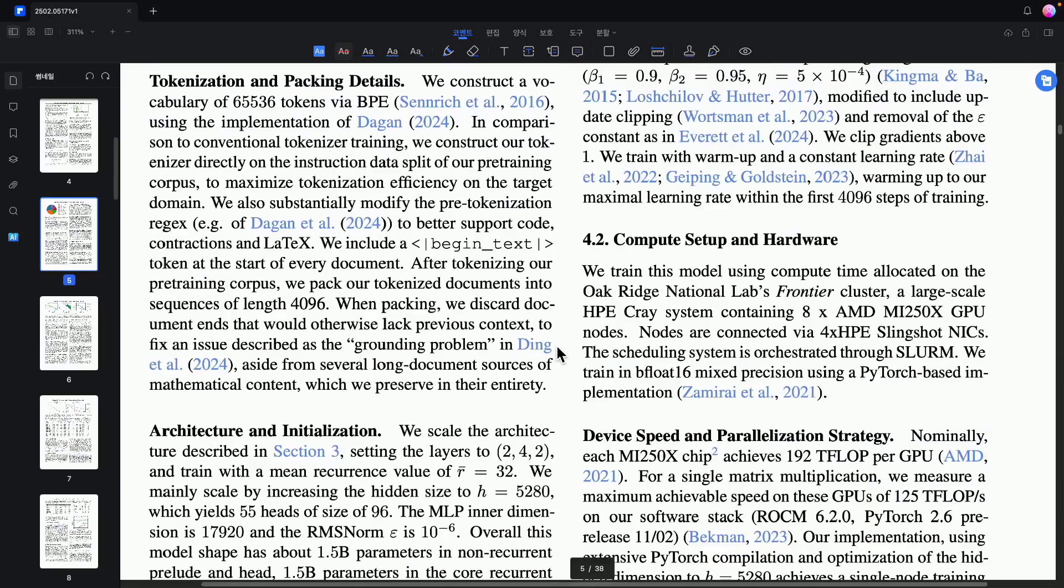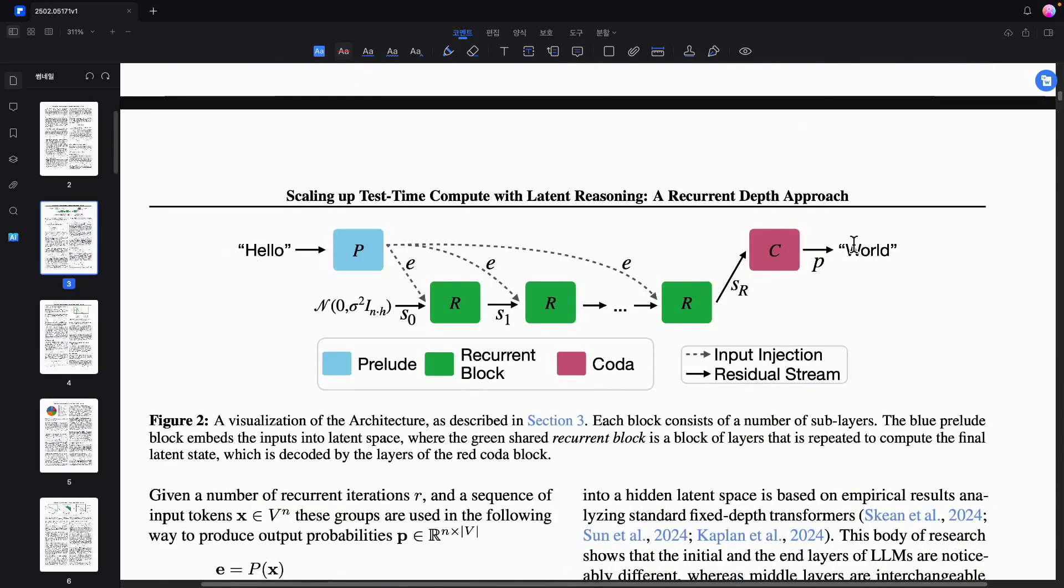Rather, this method allows the model to operate within the latent space. Within the latent space, it recurrently and repetitively processes information on its own. There's no need to translate it into another language. Before it even comes out as a word, it keeps repeating within the structure called R, continuously updating the cache state. This way, it can think without needing as much cache memory as before.